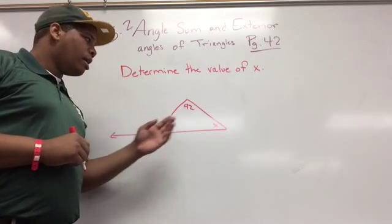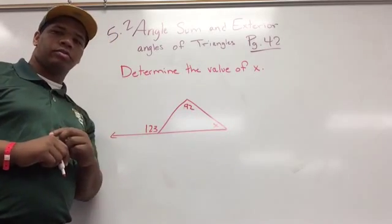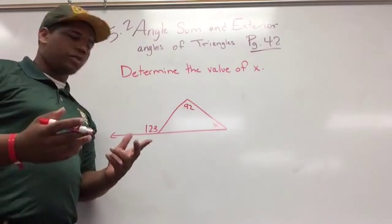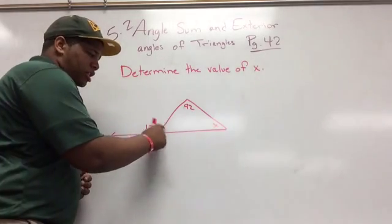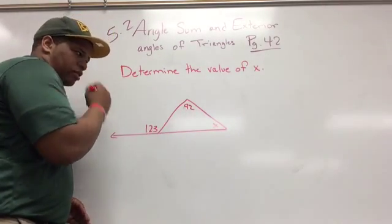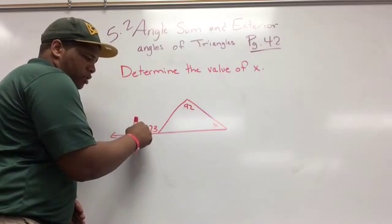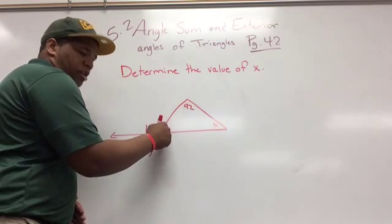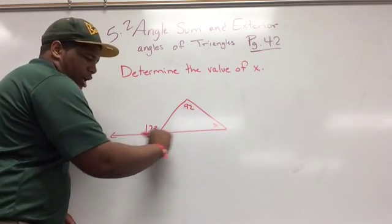Okay, on this problem I'm asked to determine the value of x again, but I'm given one interior angle and x and an exterior angle. Now there are two different ways that we can do this. The first way is I can figure out what this angle is and then use what I've been doing to figure out the other angles. So I know that this angle here, this 123, and this angle on the inside are supplementary angles because they're on a straight line right here.